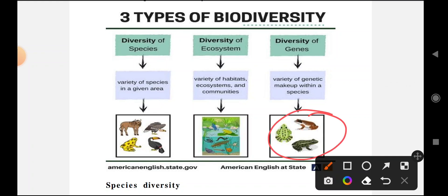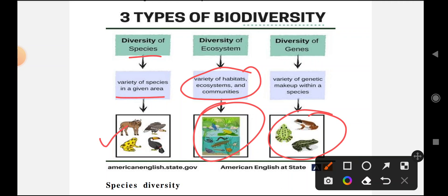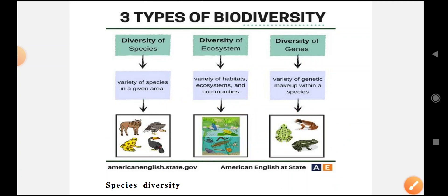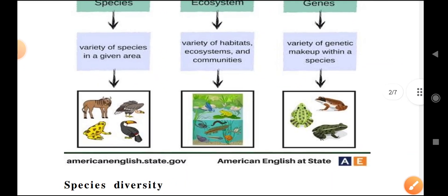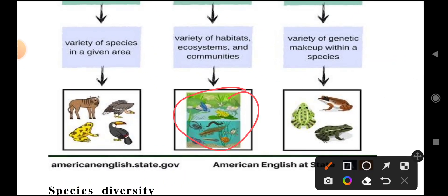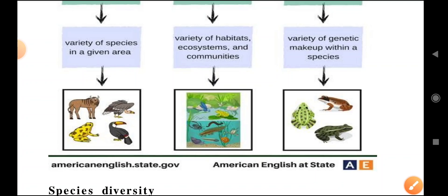Genetic biodiversity relates to genes and genetic makeup. Ecosystem biodiversity consists of everything in the environment. Species biodiversity involves classifying organisms based on their nature and characteristics. It looks at the variety of species in a given area — what lives in a particular area. Ecosystem biodiversity covers the variety of habitats and communities available in each ecosystem, while genetic biodiversity examines the variety of genetic makeup within species.